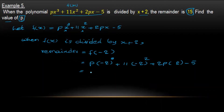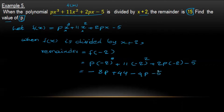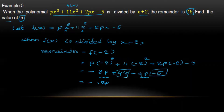Evaluating: minus 8b plus 11 into 4 plus 2b into minus 2, minus 1. So minus 8b plus 44 minus 4b minus 1. Combining like terms: minus 8b minus 4b gives minus 12b, and 44 minus 5 gives 39.